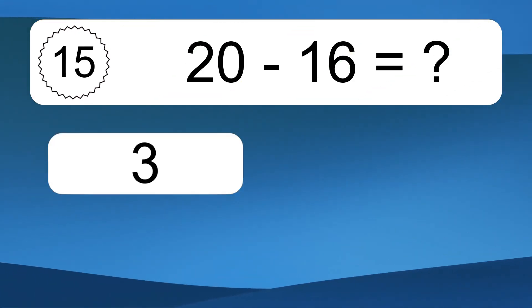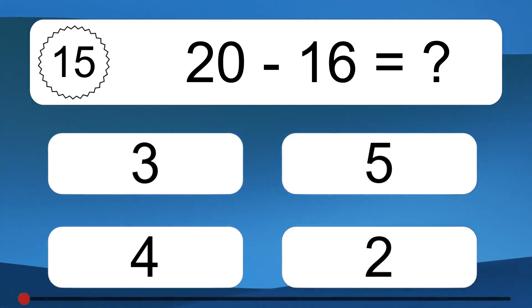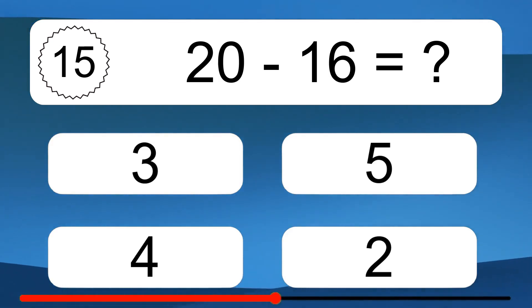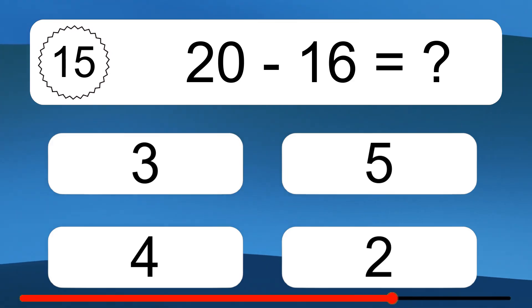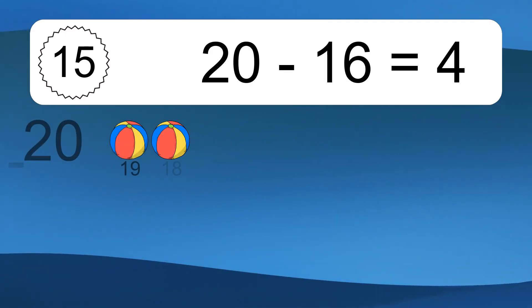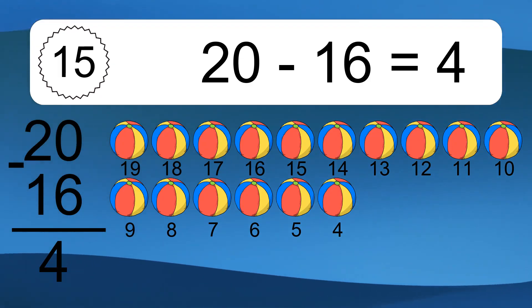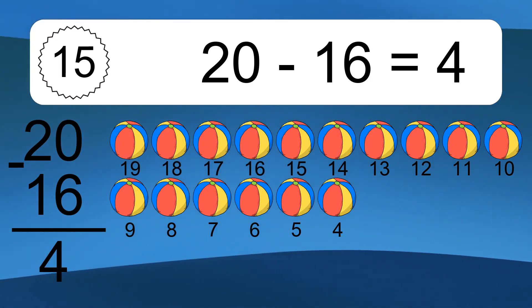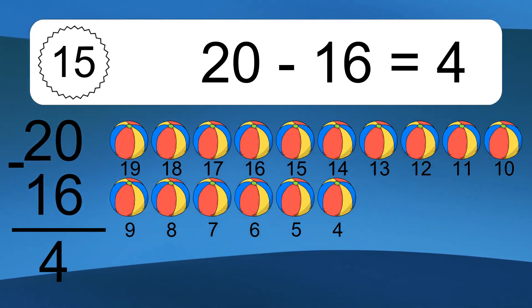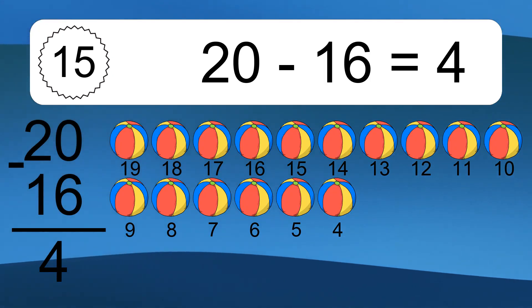20 minus 16 equals what? 20 minus 16 equals 4. Let's count it: 19, 18, 17, 16, 15, 14, 13, 12, 11, 10, 9, 8, 7, 6, 5, 4.